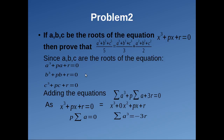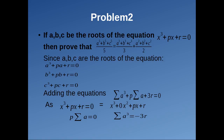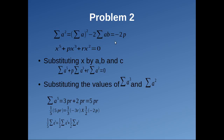Adding these equations we get sigma a³ plus p·sigma a plus 3r equals 0. The sum of the roots sigma a equals the negative of the coefficient of x² by the coefficient of x³. Since the coefficient of x² is 0 in this equation, sigma a equals 0. Therefore sigma a³ equals minus 3r. Also, sigma a² equals sigma a whole squared minus 2·sigma ab. Since sigma a equals 0 and sigma ab equals p, we get sigma a² equals minus 2p.